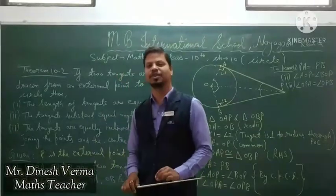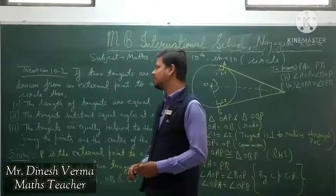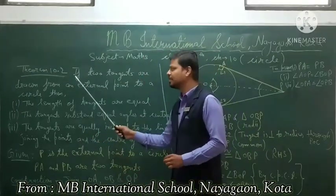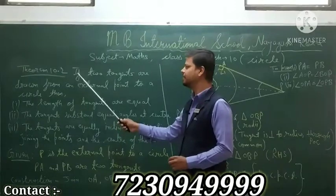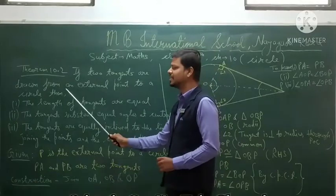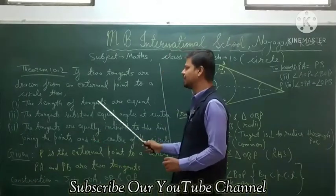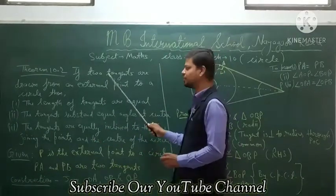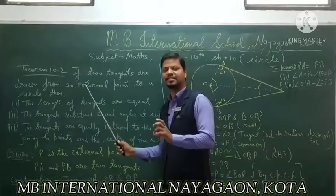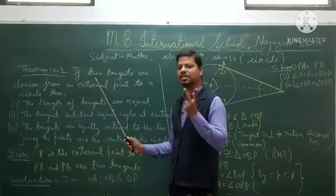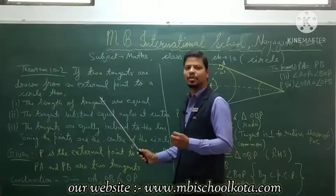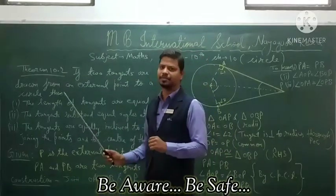Students, in our previous video we discussed Theorem 10.1 of a circle. Now in this video we discuss Theorem 10.2. This is also a very important theorem. The statement of this theorem is: if two tangents are drawn from an external point to a circle, then the first part states that the lengths of the tangents are equal.